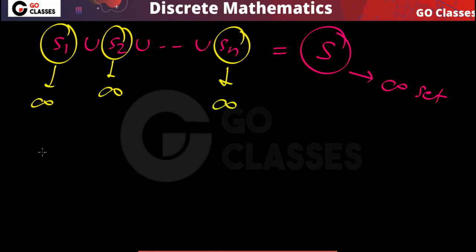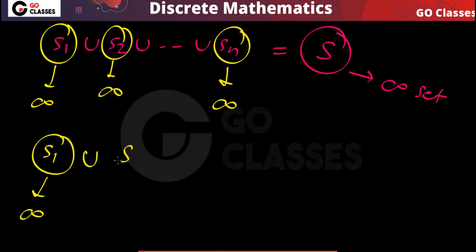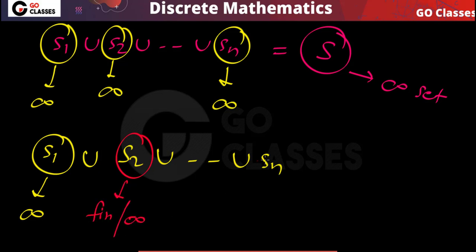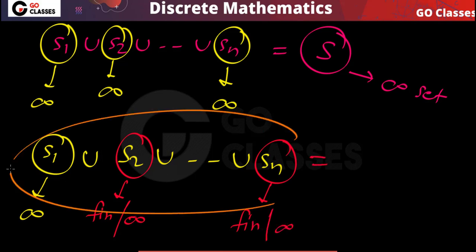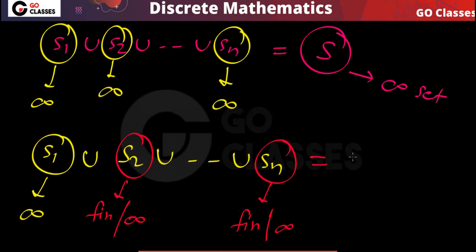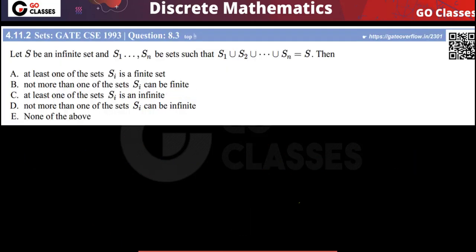If at least one of them is infinite, you don't need to worry about the others — S2 through Sn can be finite or infinite. When you combine all the elements and at least one set has infinitely many elements, the result will be infinite.